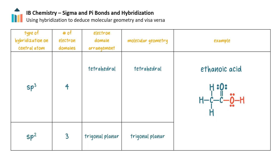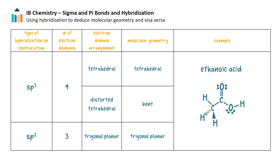The hydroxyl oxygen has two bonding domains and two lone pairs. It has four electron domains, but they are not all equivalent. And so, although oxygen is sp3 hybridized, the electron domain geometry is a distorted tetrahedral and the molecular geometry is bent. Putting all these geometries together makes the molecule look like this.